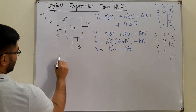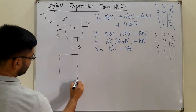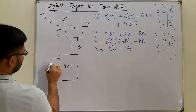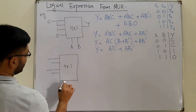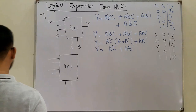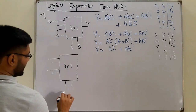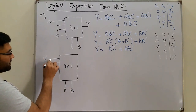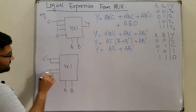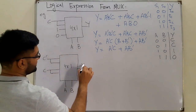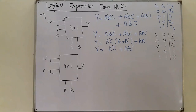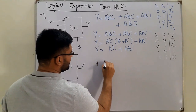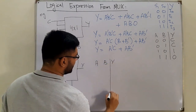Now let's look at another example. We are given another four-to-one multiplexer with four inputs and two select lines, again represented by A and B. The inputs are: C-complement, C-complement, C, and C. The output is Y. Let's draw the truth table: we have A, B, and Y.